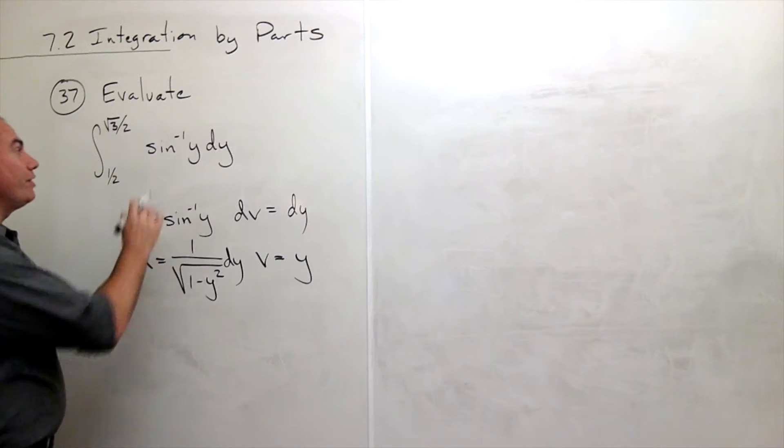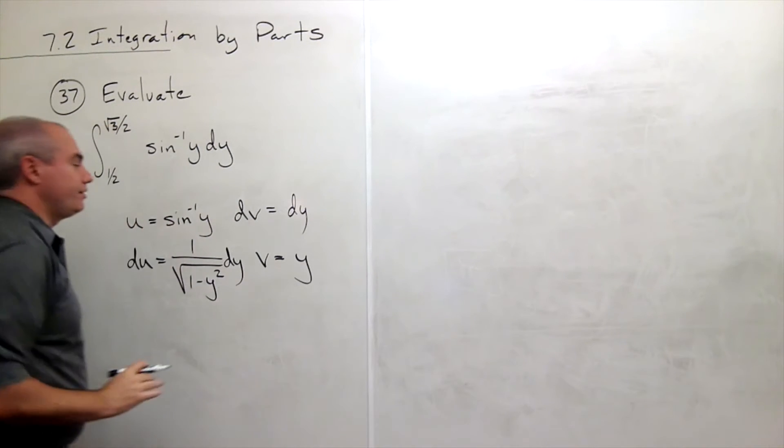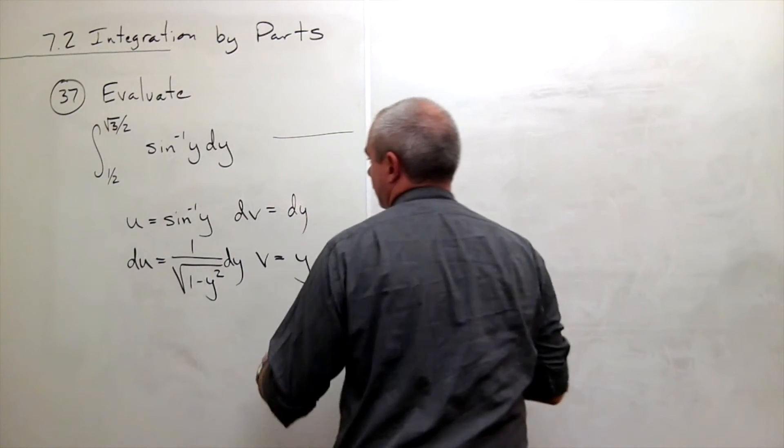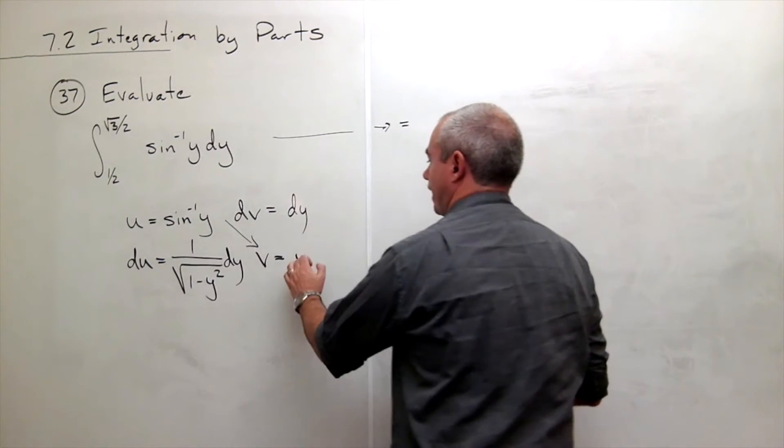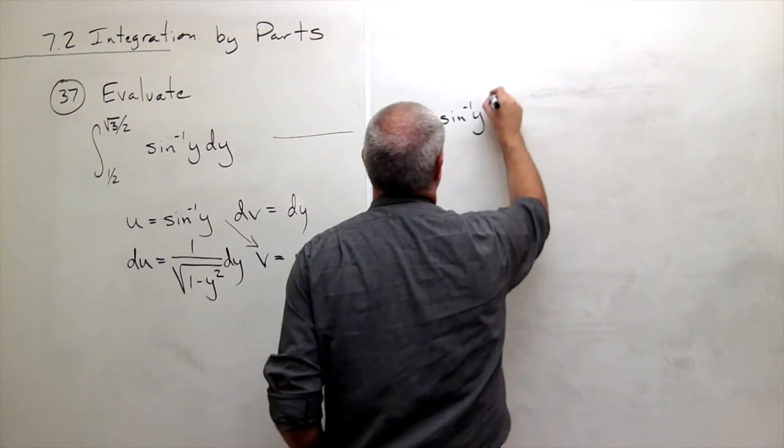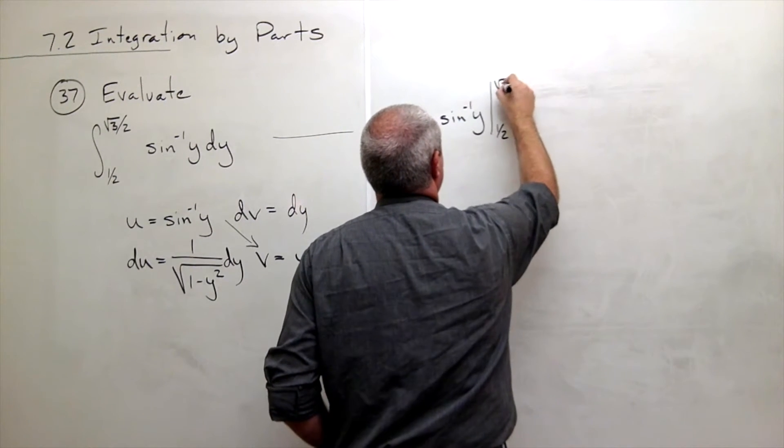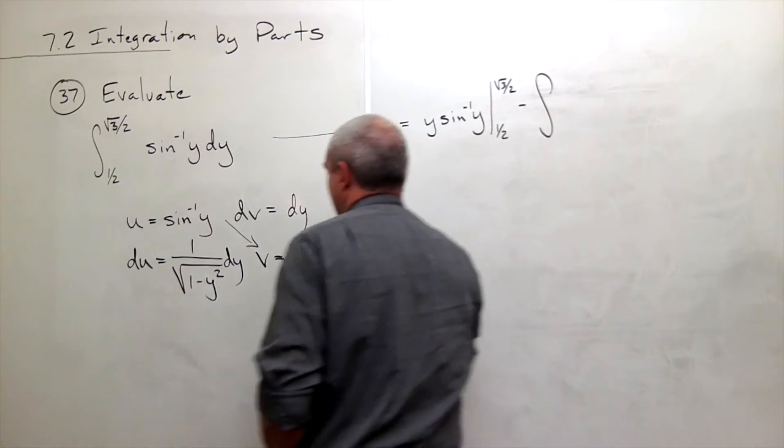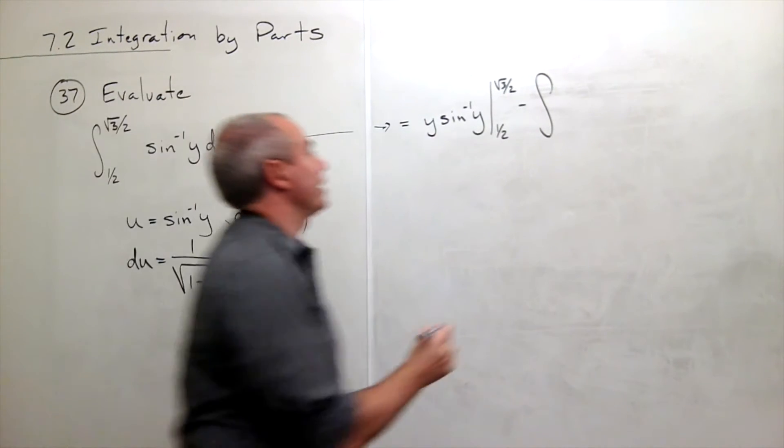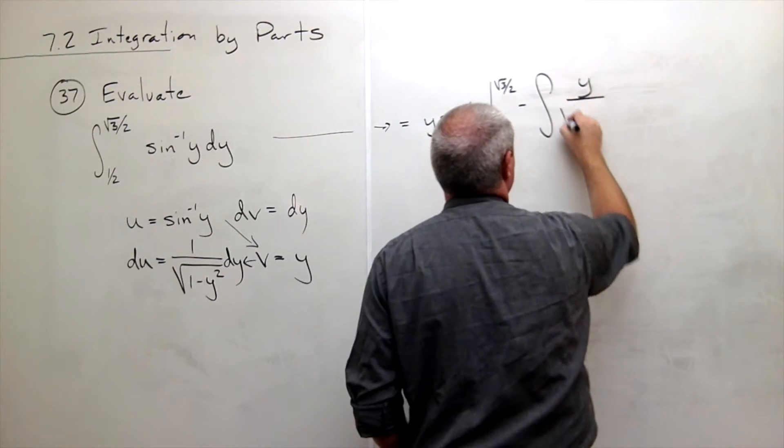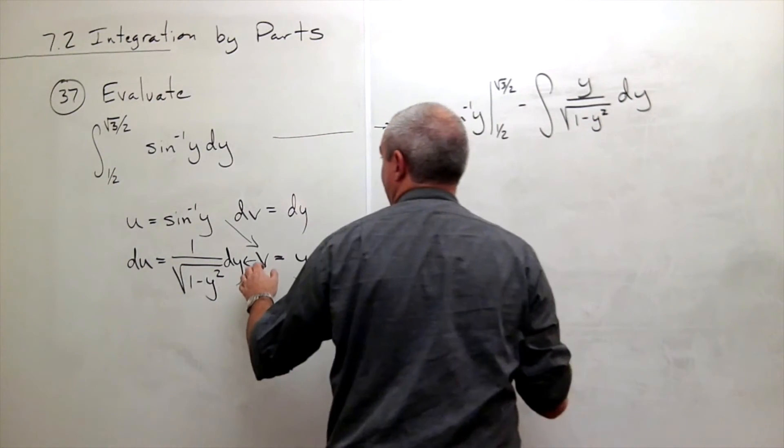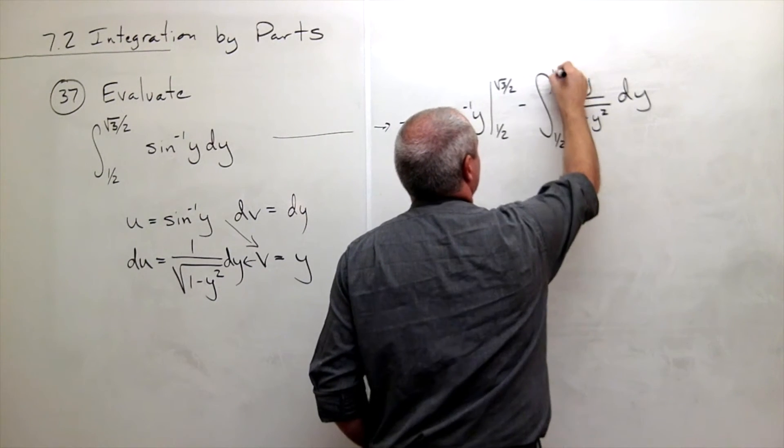So now let's rewrite this integral using these u, dv, du, and v. This is equal to u times v. So that's y times sine inverse of y. So y sine inverse of y. And remember, now that's evaluated from a half to root 3 over 2 minus the integral of v times du. So I put that y over square root of 1 minus y squared dy. And that's evaluated from a half to root 3 over 2.